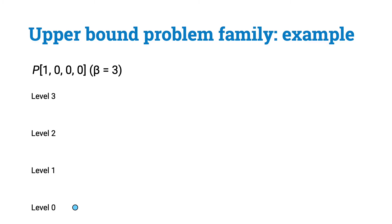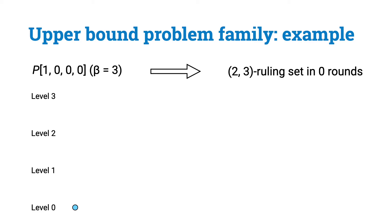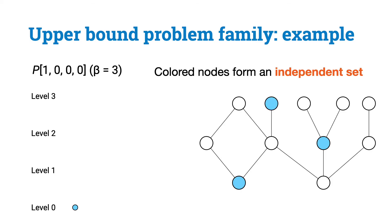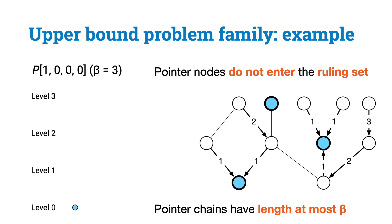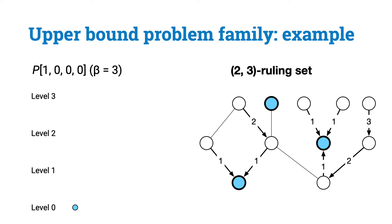Let's see an example of a problem in this family. Consider the problem p_{1,0,0,0}. In this example, beta is 3, so we have 4 levels from 0 to 3, with just one color in level 0 and no colors in the other levels. Given a solution to this problem in 0 rounds, we can get a solution for the 2-3 ruling set problem. Nodes that output a color must form an independent set since they result in a proper partial coloring, so these nodes can safely enter the ruling set. All other nodes, that is the ones that output a pointer, will not enter the ruling set. Since the levels of the pointers must strictly decrease at each step, each node is at distance at most 3 from a node in the ruling set, resulting in a solution to the 2-3 ruling set problem.